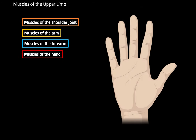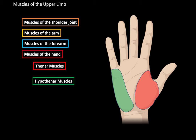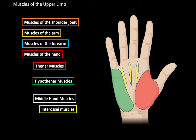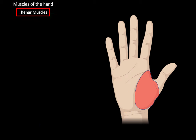The muscles of the hand are divided into specific regions. Some sources might differ in the classification, but all the muscles are the same. The muscles of the hand can be divided into the thenar muscles for the thumb, hypothenar muscles for the pinky, and the middle hand muscles, which can further be divided into the interossei muscles and the lumbrical muscles. We'll start with the thenar muscles.